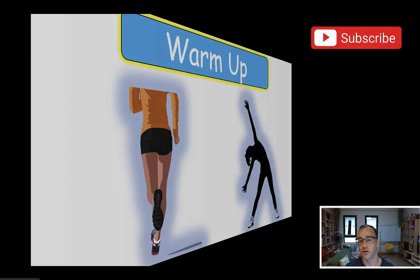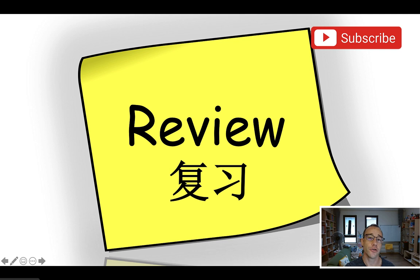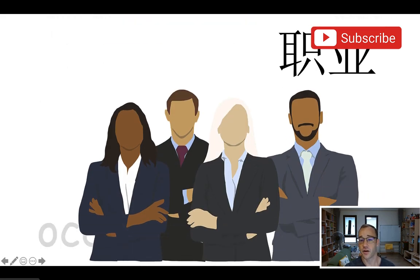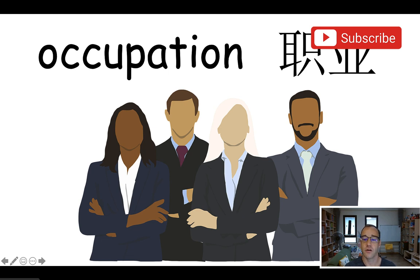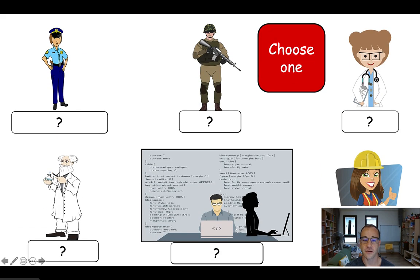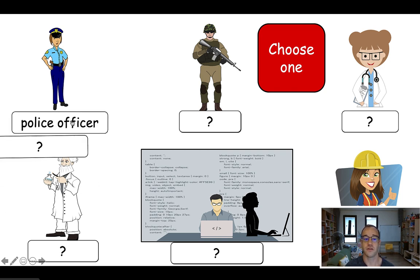Okay, so my warmup is just going to be review. Since this is part two — occupations part two — we're obviously going to be reviewing the vocabulary and everything from part one. The first thing is the word 'occupation.' I really want them to learn this word. I think it's useful and it's a harder word — I don't want to just say 'job.' For the review, I'll ask students to raise their hands, choose one, come up, tap the screen, and say the word, say the occupation.